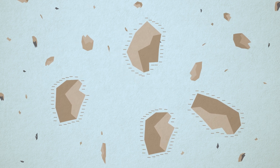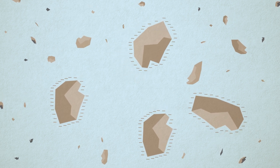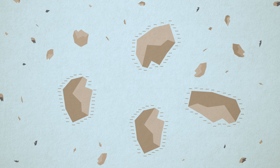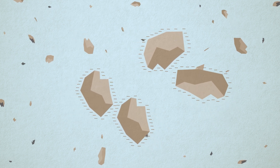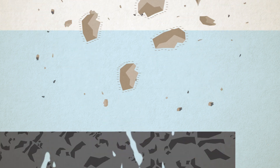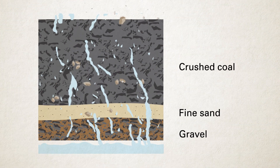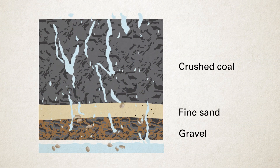The particles that cause turbidity are called colloids. These particles are continuously moving in water because they carry a negative surface charge, so every time they come close to each other they bounce apart. Colloids are so small that they will go straight through a filter.